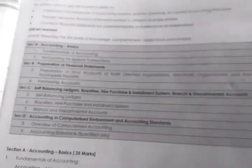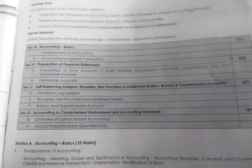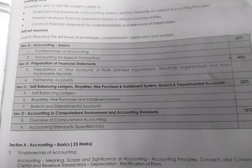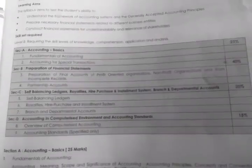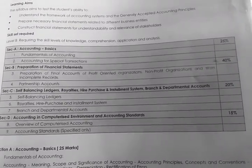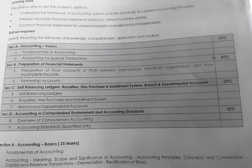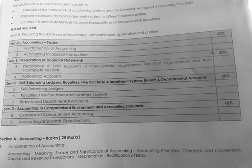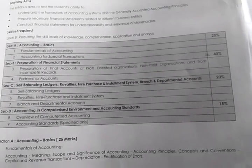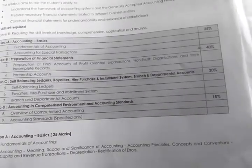Now I will tell you the weightage. They have segregated it into four parts: Section A, B, C, and D. Section A covers accounting basics — fundamentals of accounting and accounting for special transactions — given 25% weightage. Section B covers preparation of financial statements, given 40% weightage, including final accounts of profit-oriented organizations, non-profit organizations, and incomplete records.